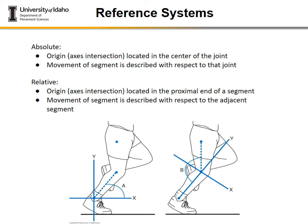Absolute or segment angles refer to the orientation of a segment in reference to space or another reference system — often measured from the origin through a distal or proximal joint center. A common reference is the distal end of the segments with respect to the right horizontal. Examples include the thigh, the leg, the forearm, or the trunk. Relative angles, also referred to as joint angles, are the angles formed between two segments — at the knee, ankle, or hip — where two segments come together to form a joint angle.